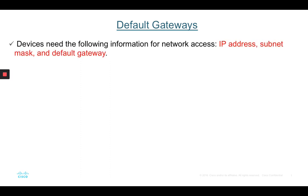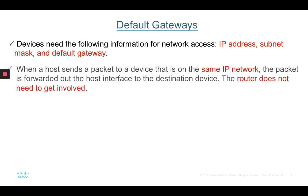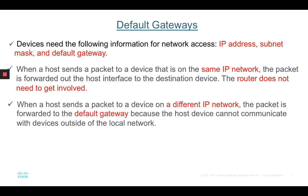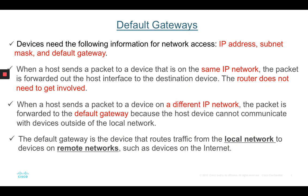Let's talk about default gateways. Devices need the following information for network assignment: IP address, subnet mask, and default gateway. When a host sends a packet to a device on the same IP network, the packet is forwarded out the host interface to the destination device — the router does not need to get involved. However, when the host sends a packet to a device on a different IP network, the packet is forwarded to the default gateway, because the host device cannot communicate with devices outside of the local network. The default gateway is a device that routes traffic from the local network to devices on remote networks, such as devices on the internet.